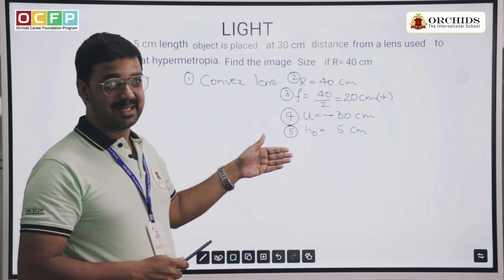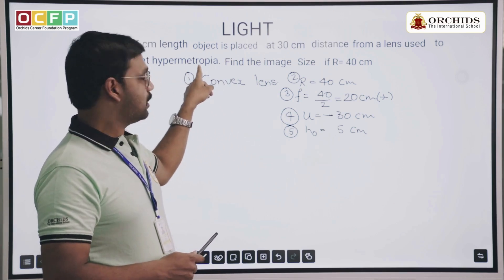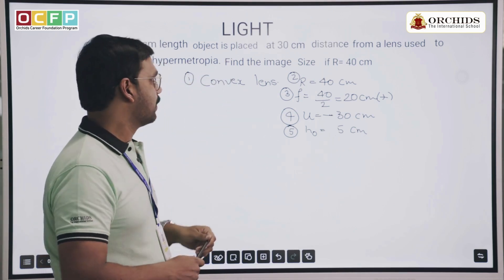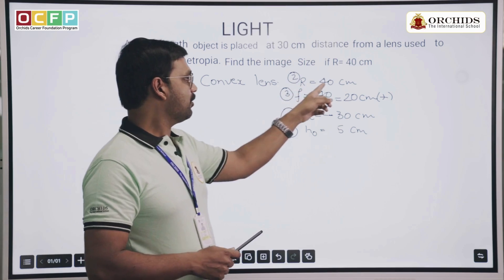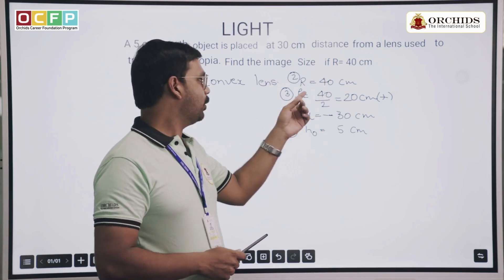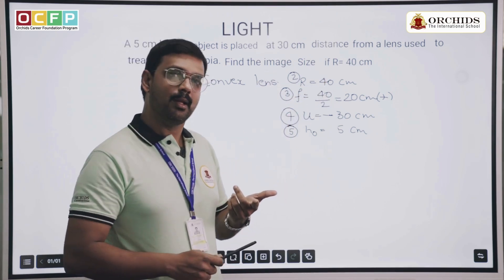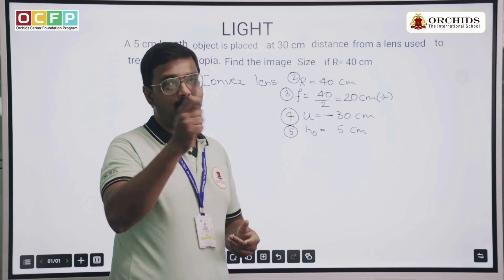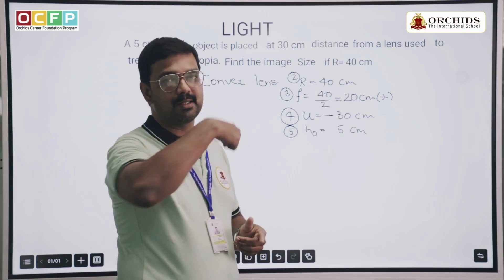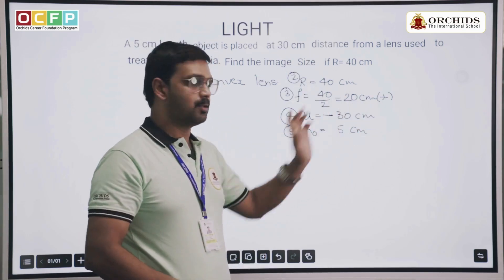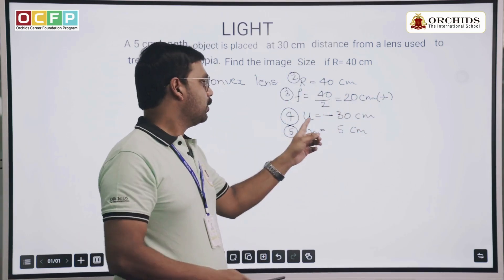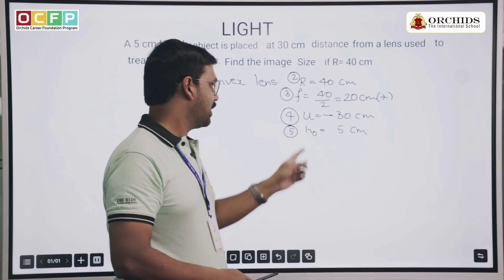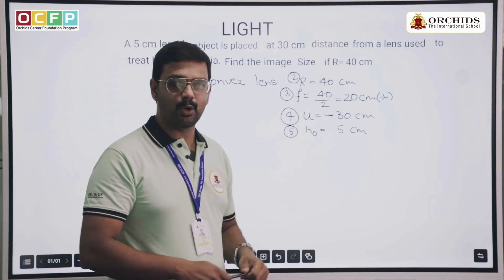Since it is treating hypermetropia, the obvious lens is a convex lens. Radius of curvature is 40 cm; the focal length is half of the radius of curvature, so we get f = 20 centimeters (positive, since it's a convex lens). The object is on the negative side, so u = minus 30 centimeters, and H naught is equal to 5 centimeters.